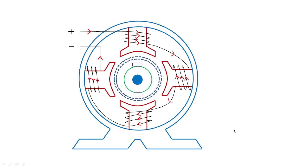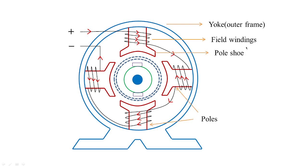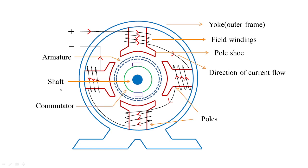We have to keep in mind the construction details: you have a yoke which is the outer frame, you have the field windings which are placed on the poles, the poles are supported by pole shoes such that the windings placed on the poles should not fall on the rotating part of the machine. The rotating part consists of the shaft and the commutator, where the entire machine is supported by brush contacts where you collect the current.